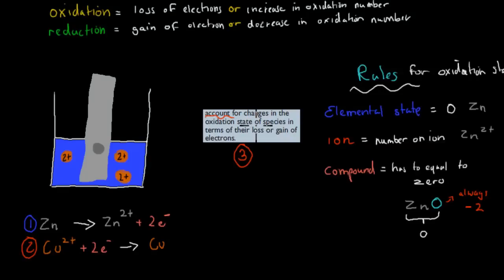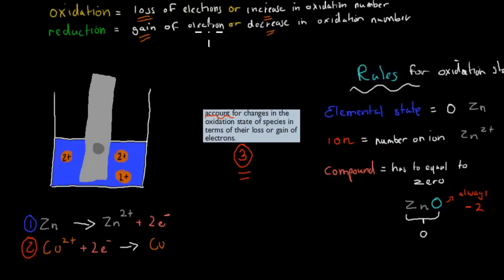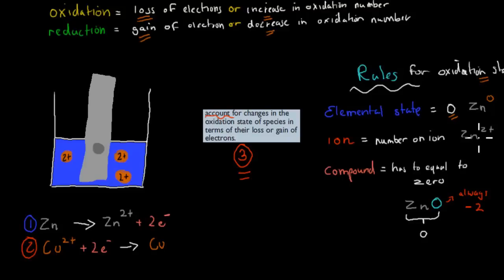The third dot point was to account for changes in oxidation state of species in terms of their loss or gain of electrons, covered in video number three. Oxidation is the loss of electrons or the increase in oxidation number. Reduction is the gain of electrons or the decrease in oxidation number. The rules: if a species is in its elemental state, its oxidation state is always zero. If it's an ion, its oxidation state is whatever the charge of the ion is. If it's a compound, both elements must add up to zero — for example, in zinc oxide, oxygen is always minus two, so zinc must be plus two.